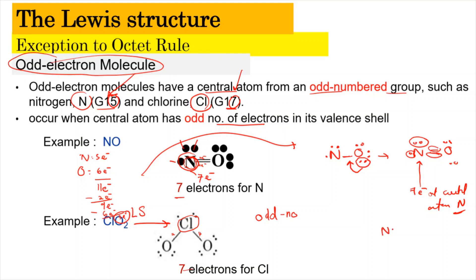The formal charge here is essentially 0, and the molecule is stable. The formal charge of nitrogen is 5 minus 3 lone pair electrons minus 2 bonding pairs, giving 0. Similarly for oxygen: 6 minus 4 lone pair electrons minus 2 bonding pairs, giving 0. So they are essentially stable, but they have an odd electron molecule with an odd number of electrons at the central atom.